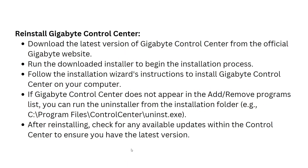To reinstall, first download the latest version of Gigabyte Control Center from the official Gigabyte website, then run the downloaded installer to begin the installation process and follow the installation wizard instructions. If the Control Center does not appear in the Add/Remove Programs list, you can run the uninstaller from the installation folder, for example: C:\Program Files\Control Center\uninstall.exe. After reinstalling, check for any available updates within the Control Center to ensure you have the latest version.